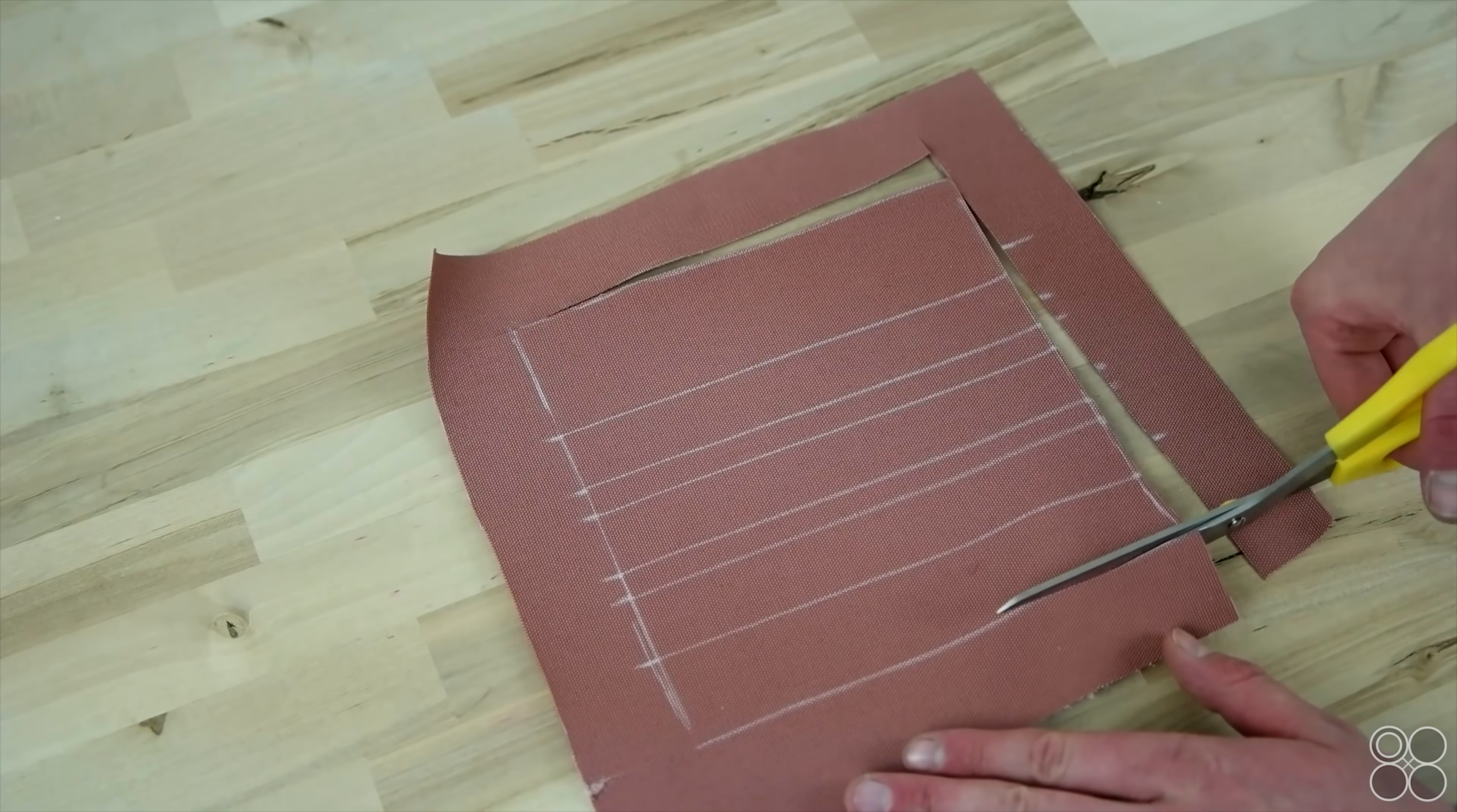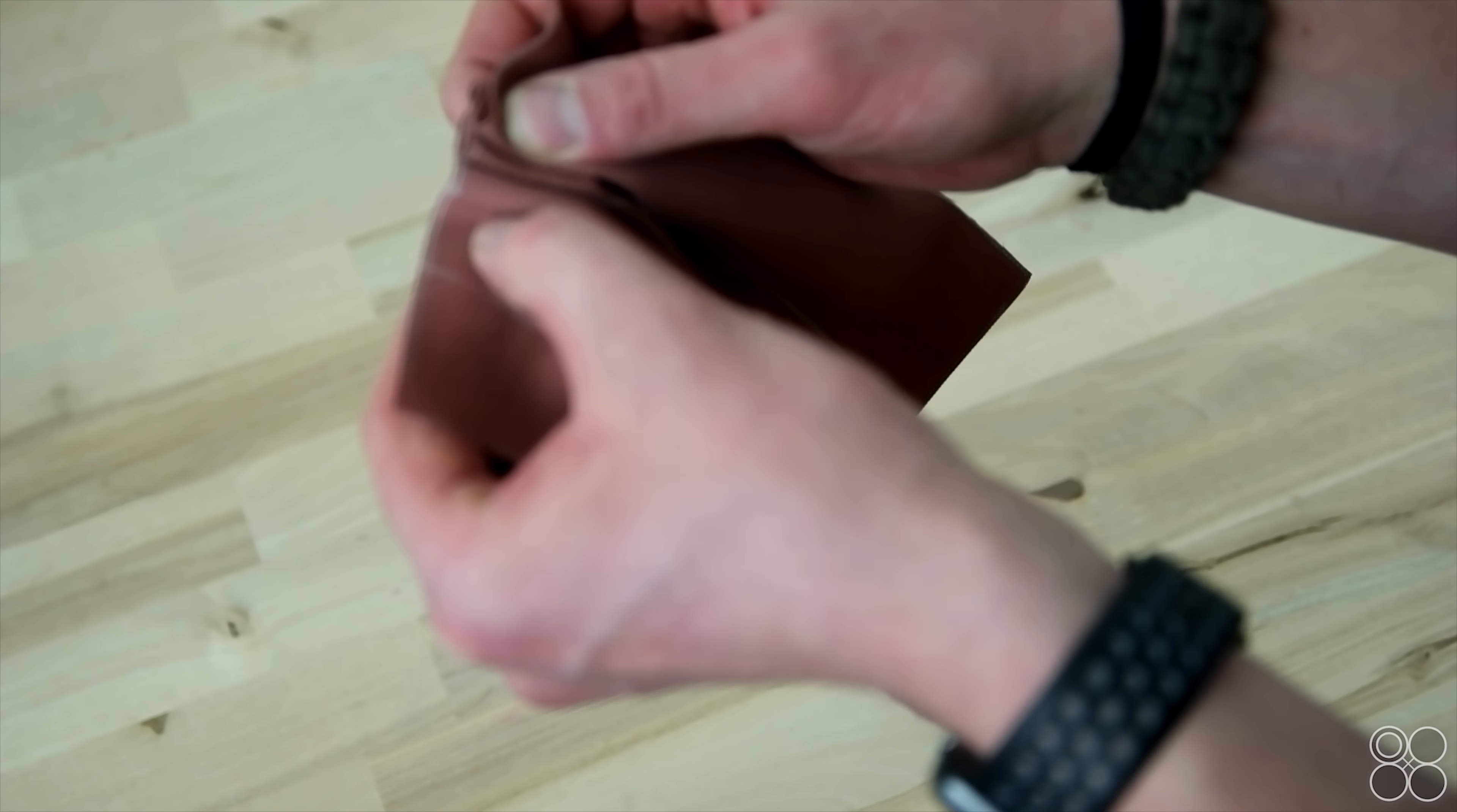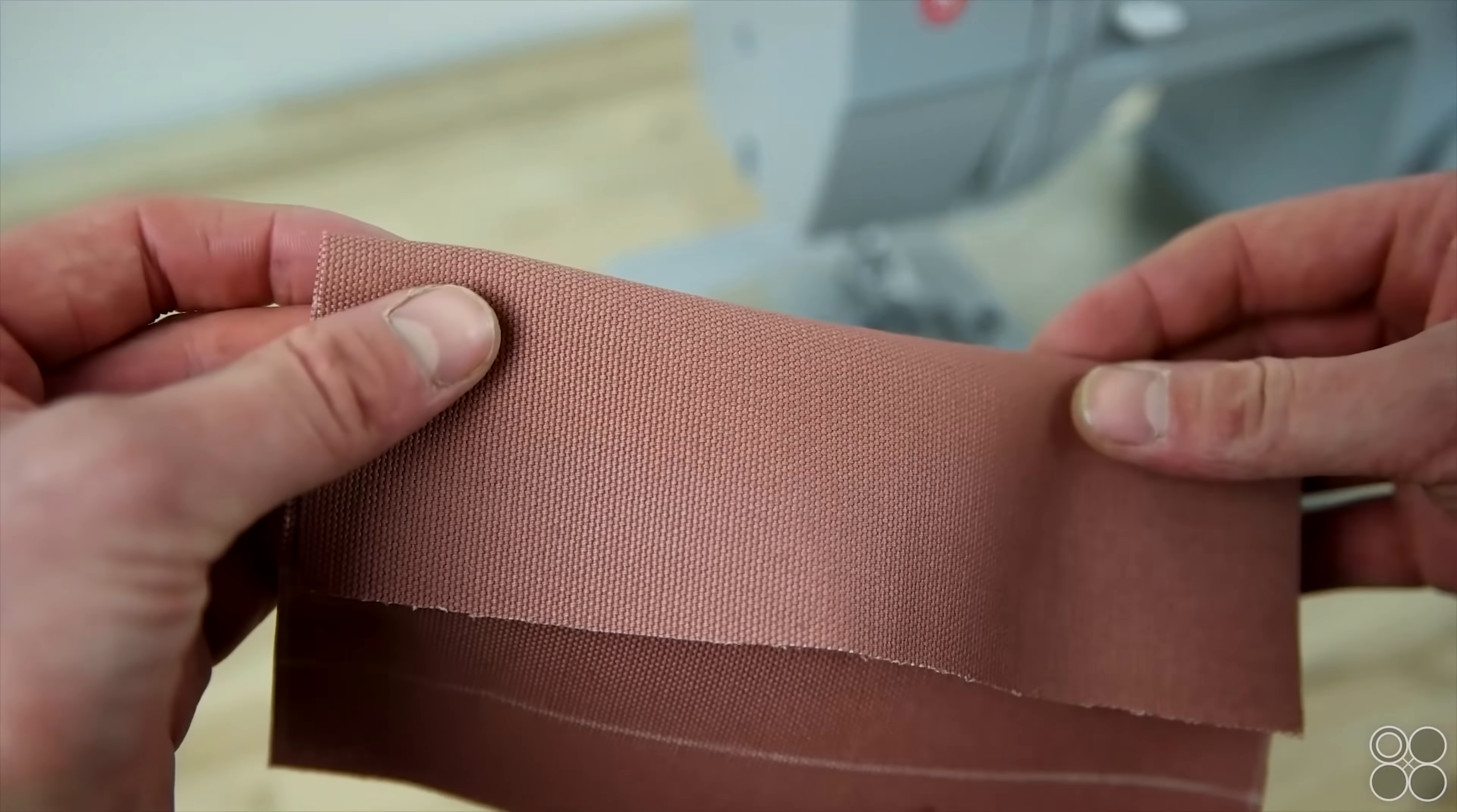You're going to want to start by cutting out your pattern. And it's that simple, just make sure the lines are touching. But we're going to run you through a quick step that will make your surgical mask a little more structured in the end, and especially if you're using a thicker fabric.